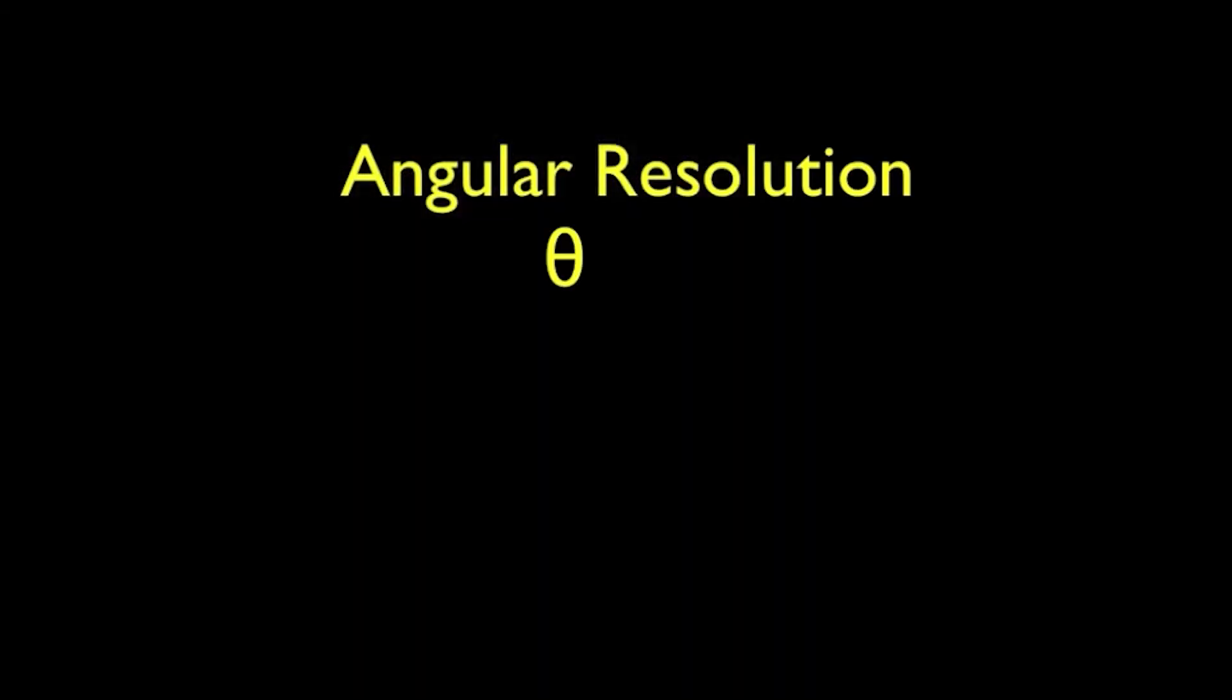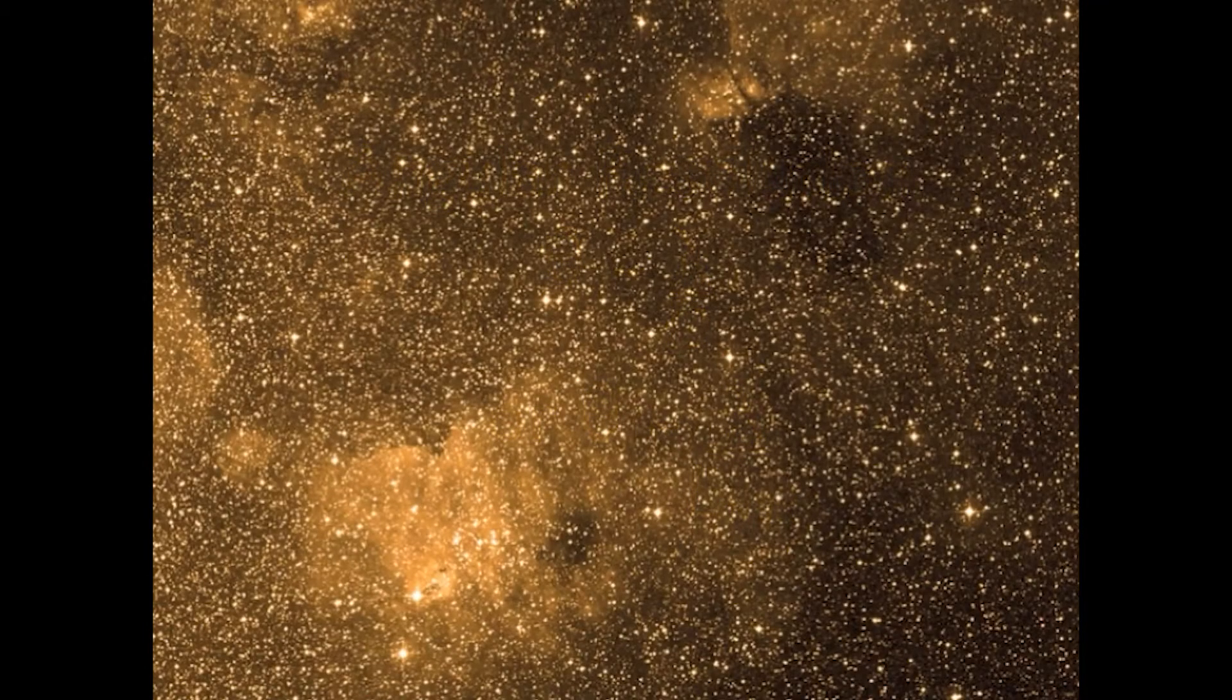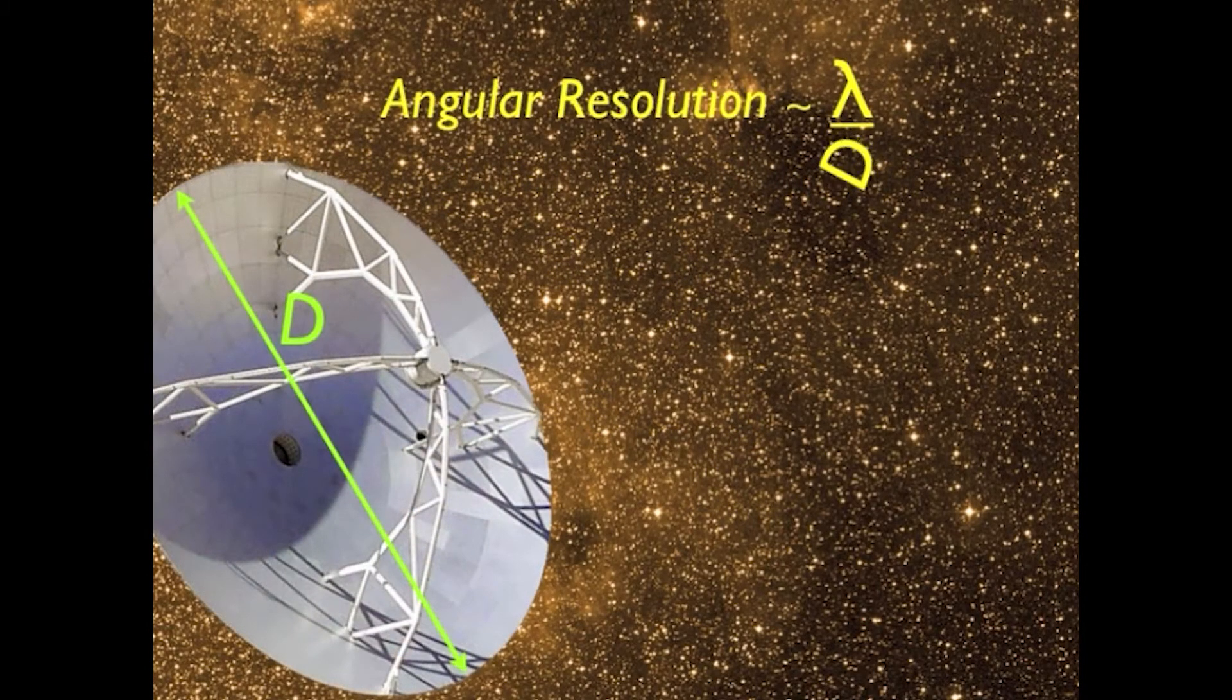We're all familiar with the concept of angular resolution. This is the smallest-scale structure that can be resolved by a telescope, and for single-dish telescopes, this is inversely proportional to the width of the mirror.